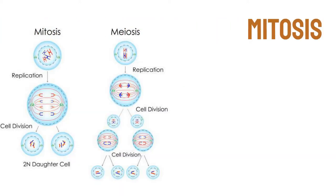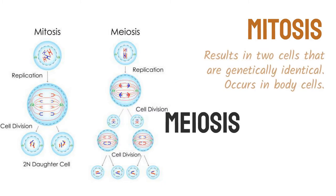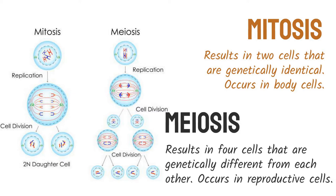Mitosis and meiosis. Mitosis results in two cells that are genetically identical and occurs in body cells. Meiosis results in four cells that are genetically different from each other and occurs in reproductive cells.